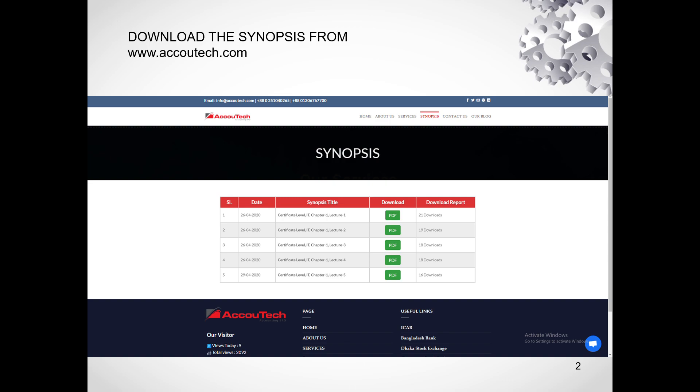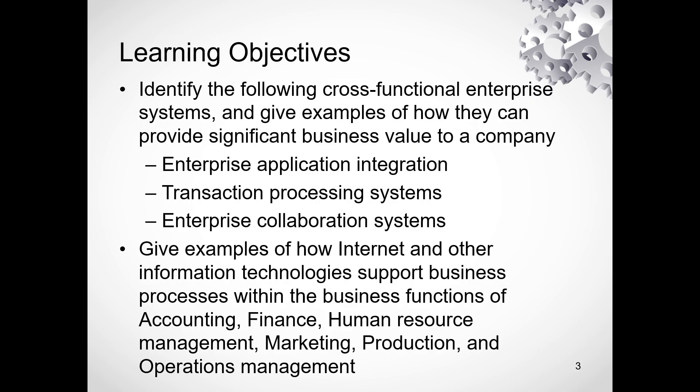First, we will download the Learning Objectives. This chapter is complete and we will cover two topics. The question is about the two topics: identify the following cross-functional enterprise systems — Enterprise Application Integration, Transaction Processing System, and Enterprise Collaboration System.